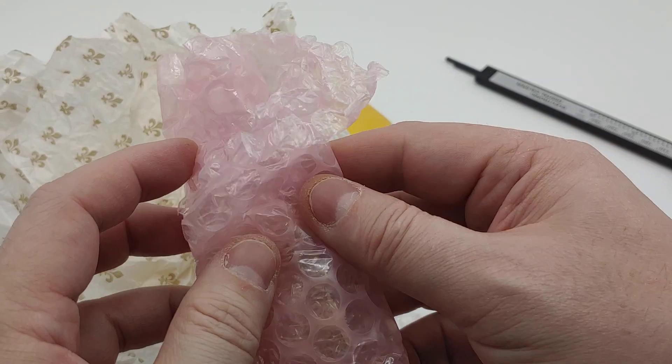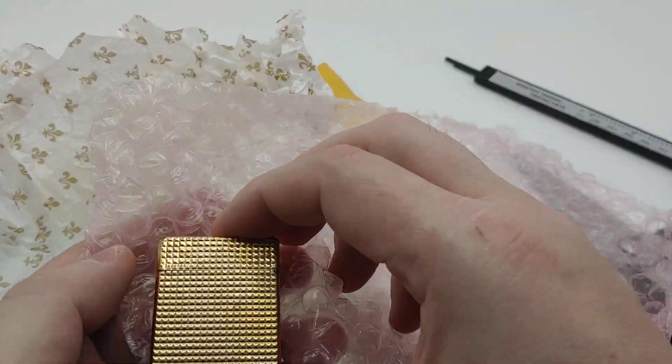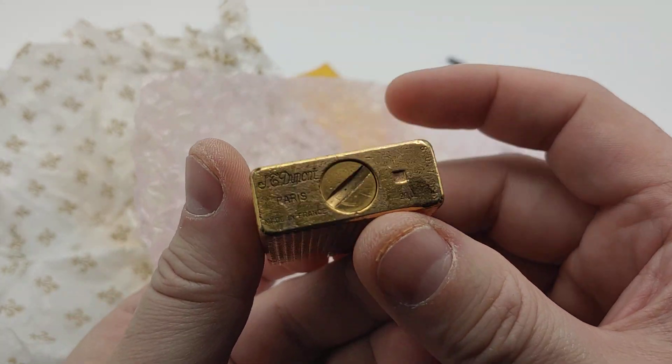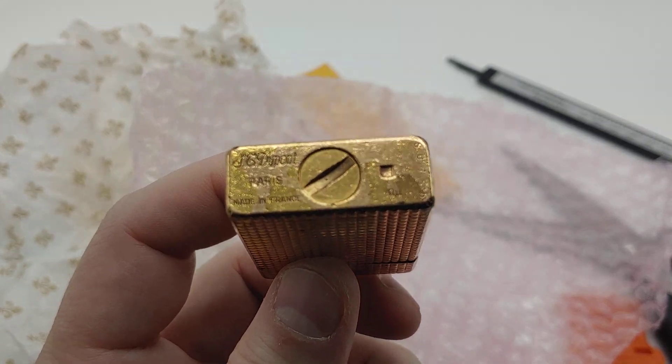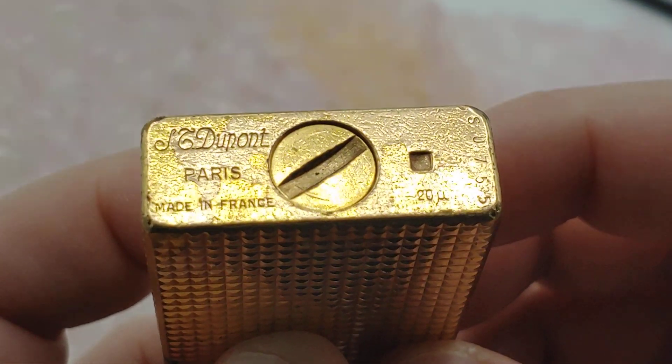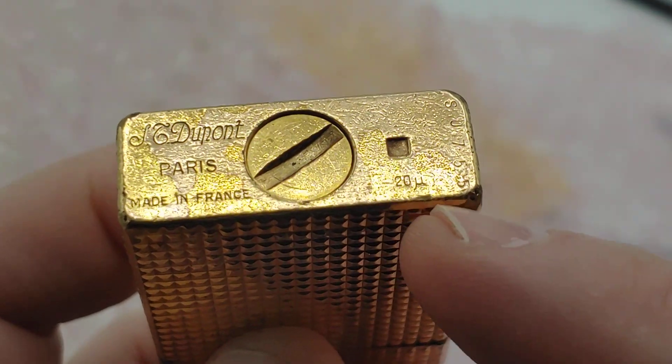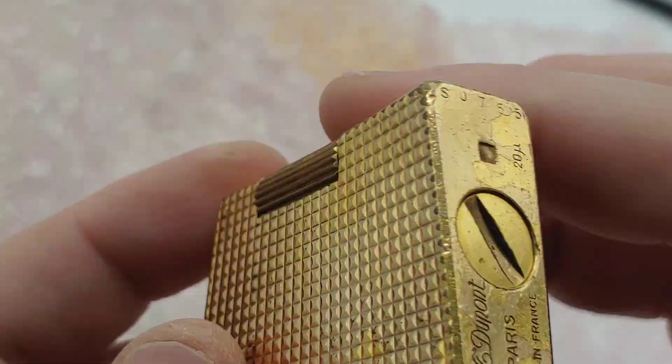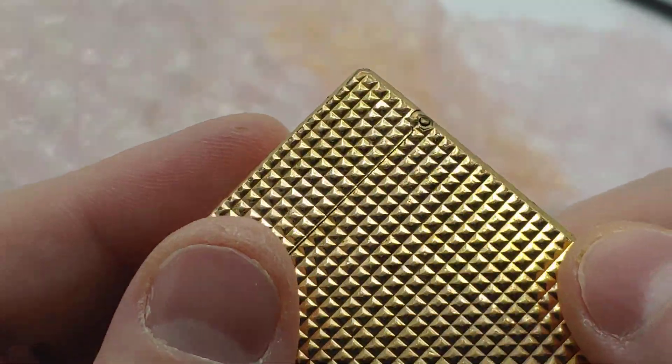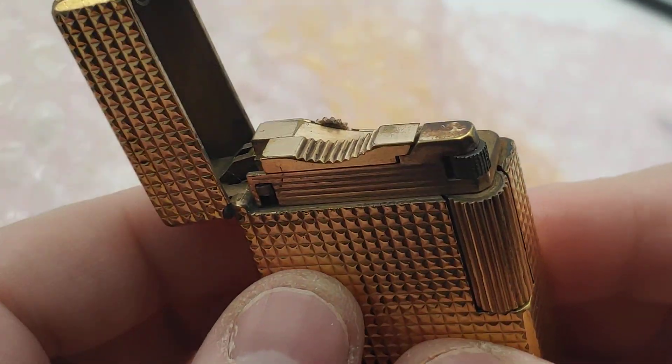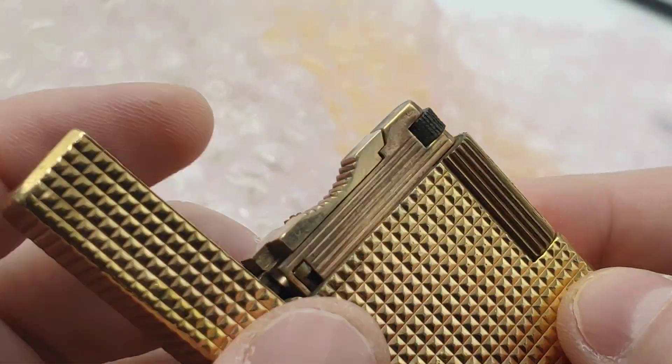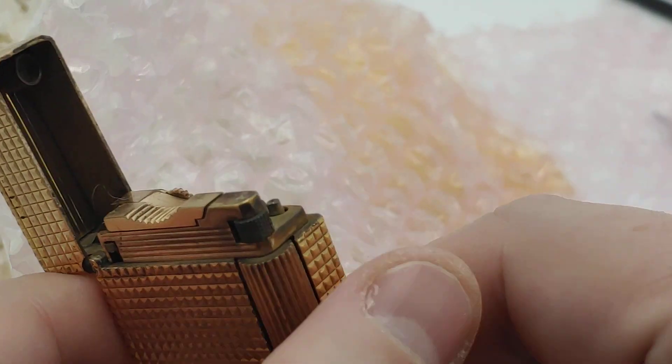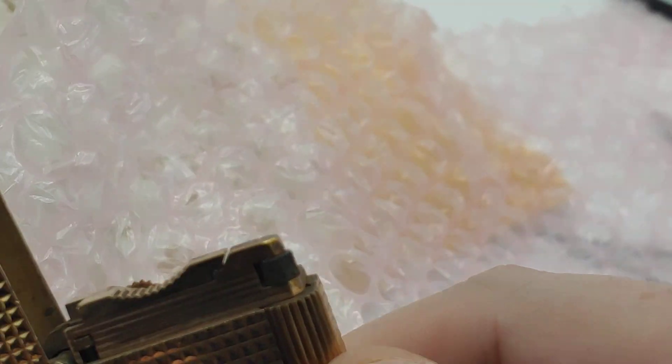Oh a little French action here, beautiful. Oh yeah this thing is cool, that's old. So this is a St. Dupont made in France Paris, 20 micron 18 carat gold plated lighter. Very cool, let's see if we got some flint action going on.